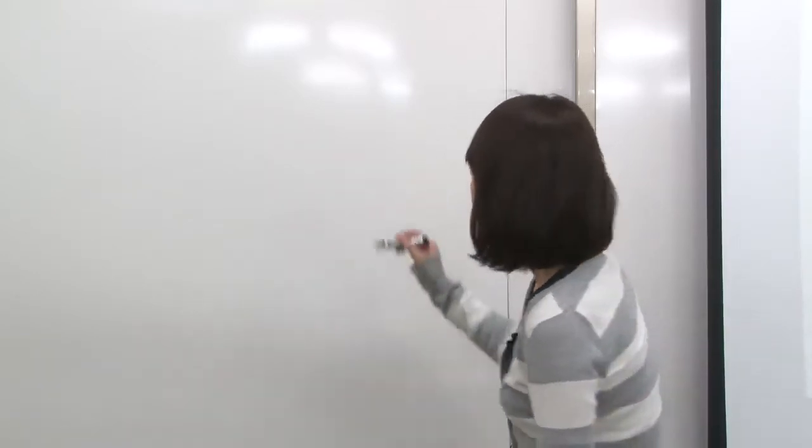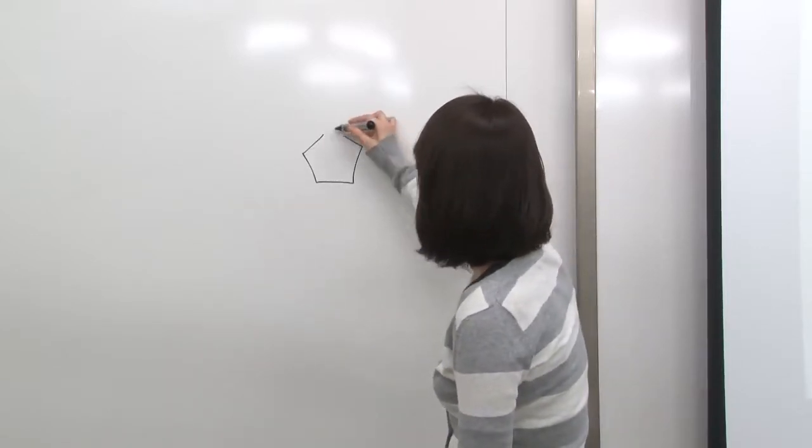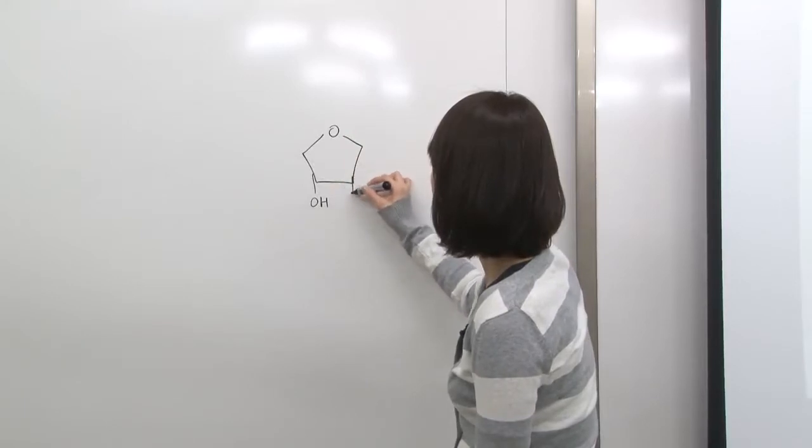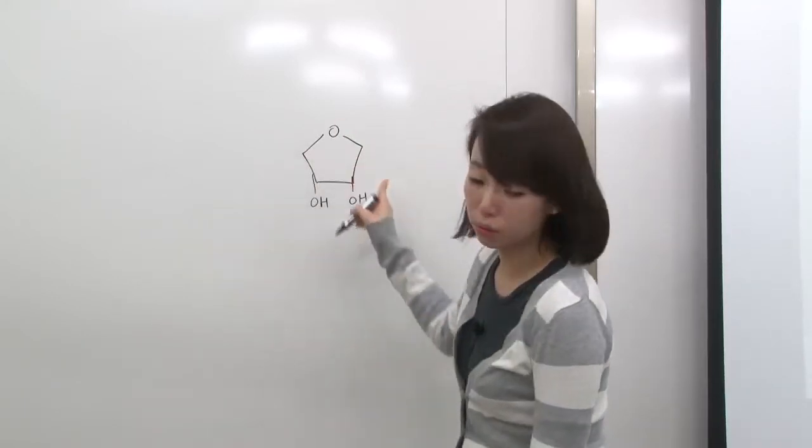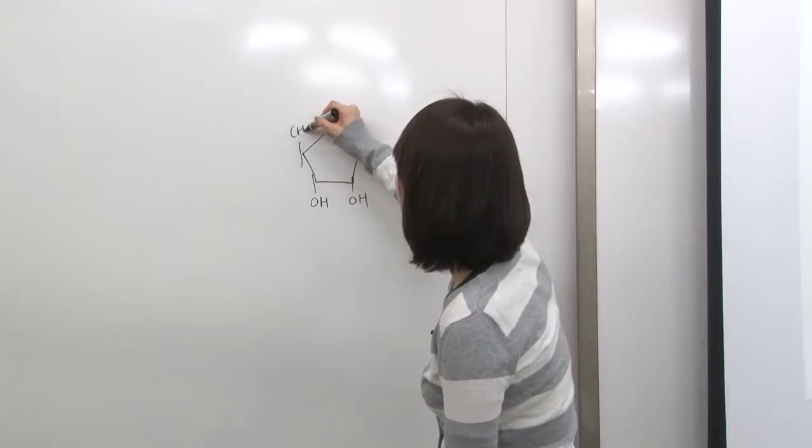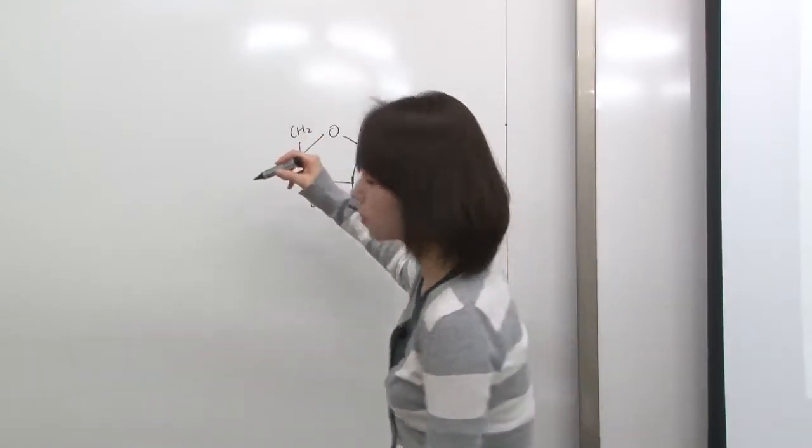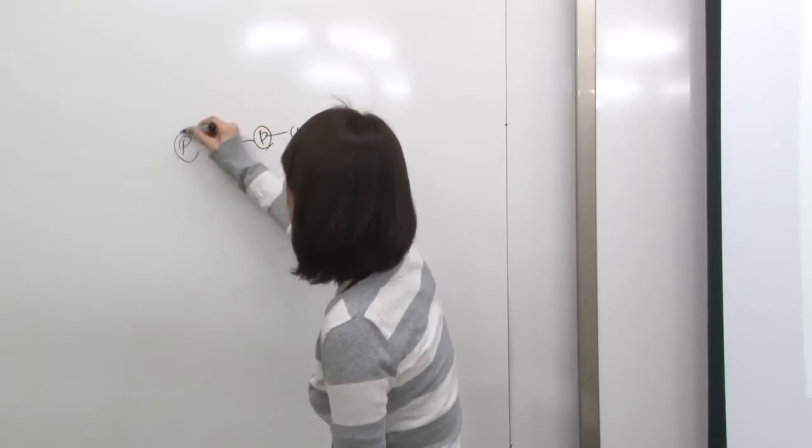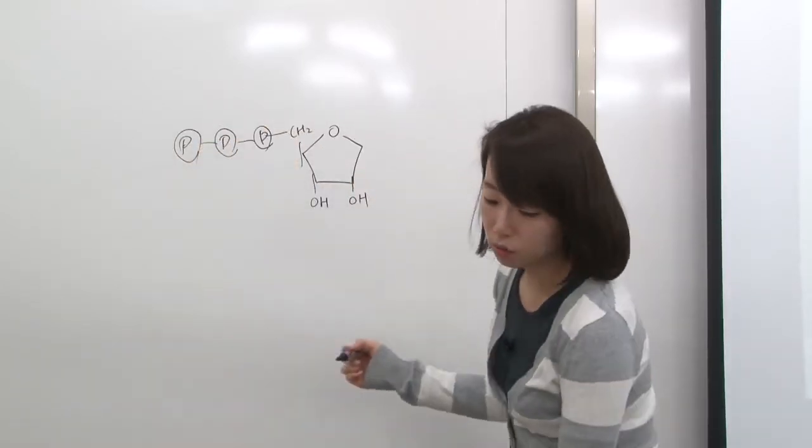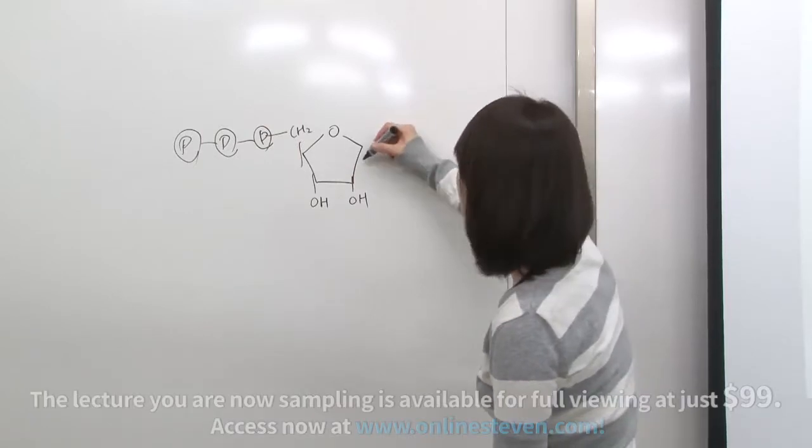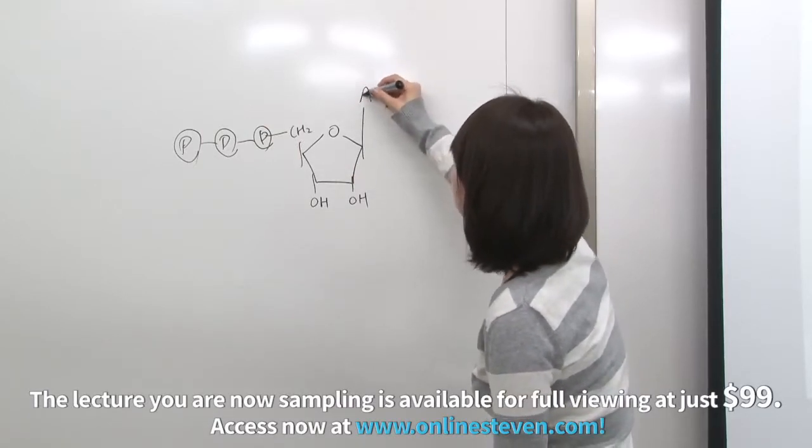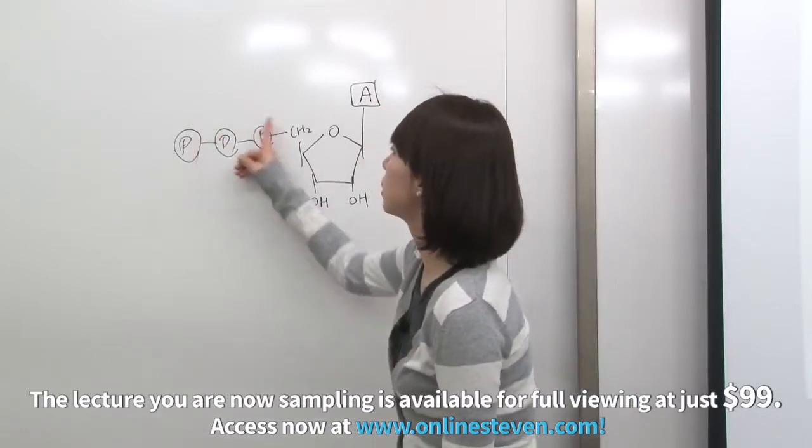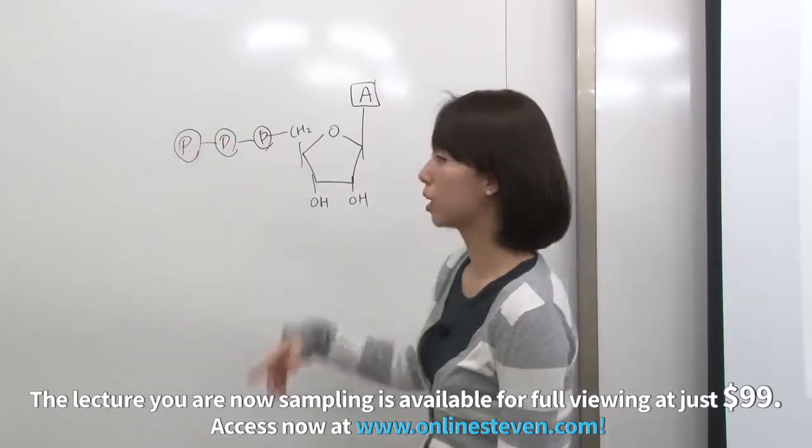When you look at ATP, it's actually a nucleotide. It has a ribose ring, which is a sugar, and then it has phosphate groups. So it has three phosphates, and also attached to this, you have the base adenine. So this is ATP, adenine triphosphate.